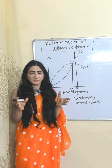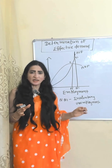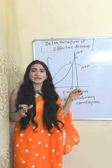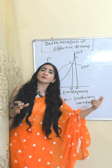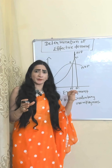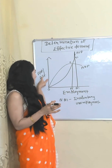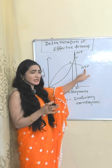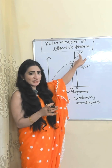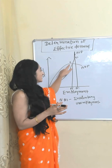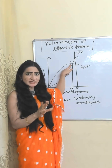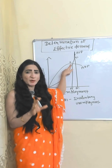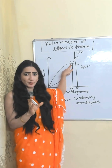Determination of effective demand: effective demand is the point of equilibrium where aggregate demand price equals aggregate supply price. On the diagram, with employment on one axis and aggregate demand and supply prices on the other, at point E the aggregate demand function curve intersects the aggregate supply function curve, meaning aggregate demand price equals aggregate supply price. That is why E point is called the effective demand point.